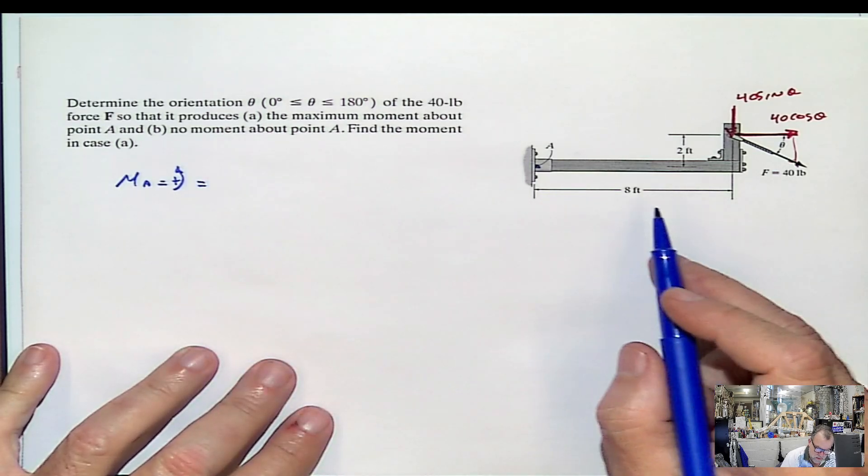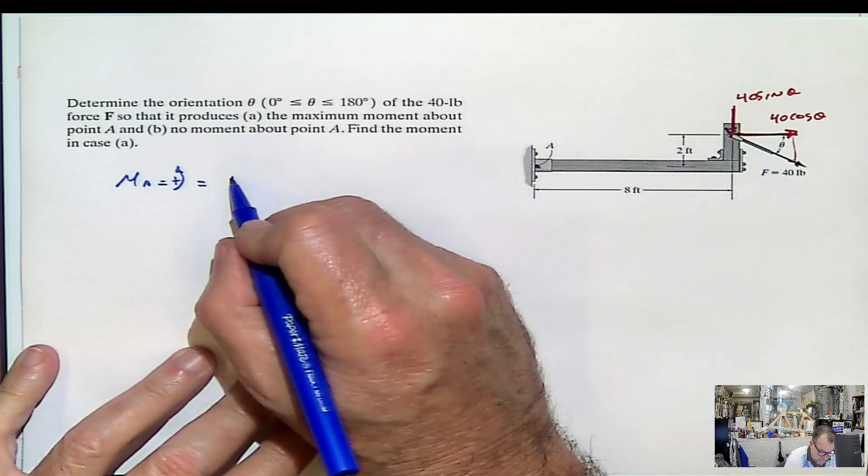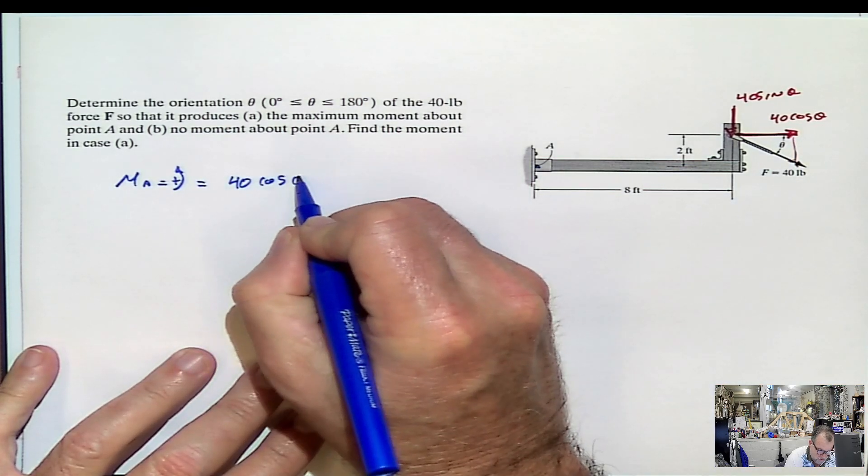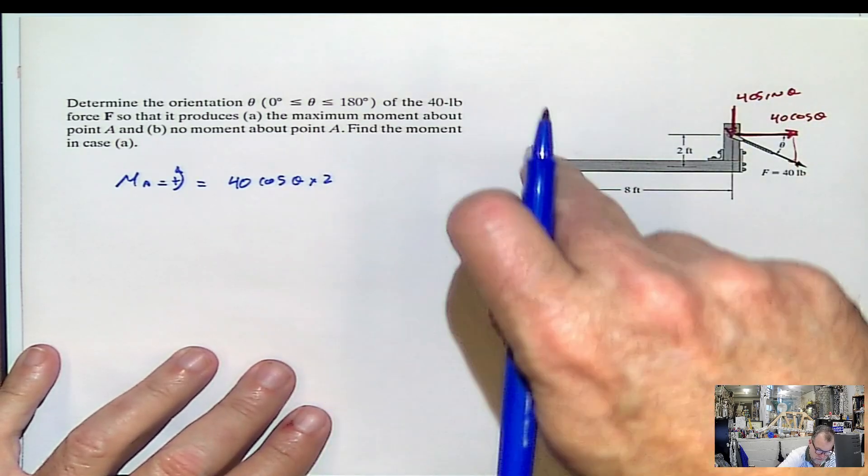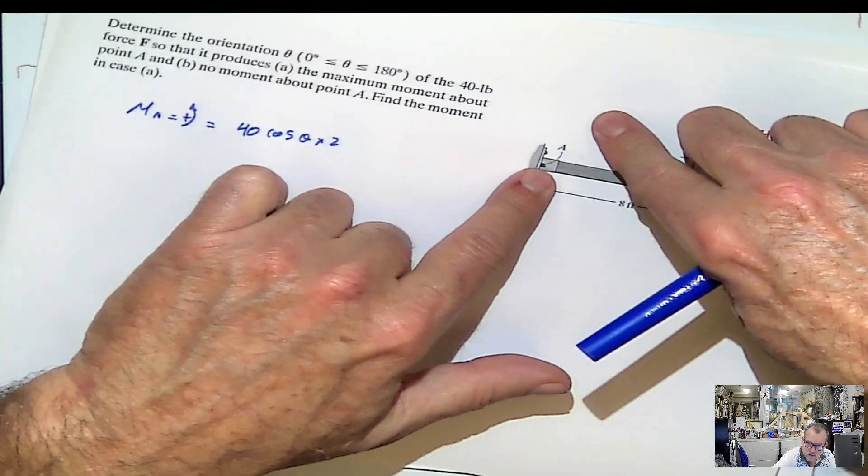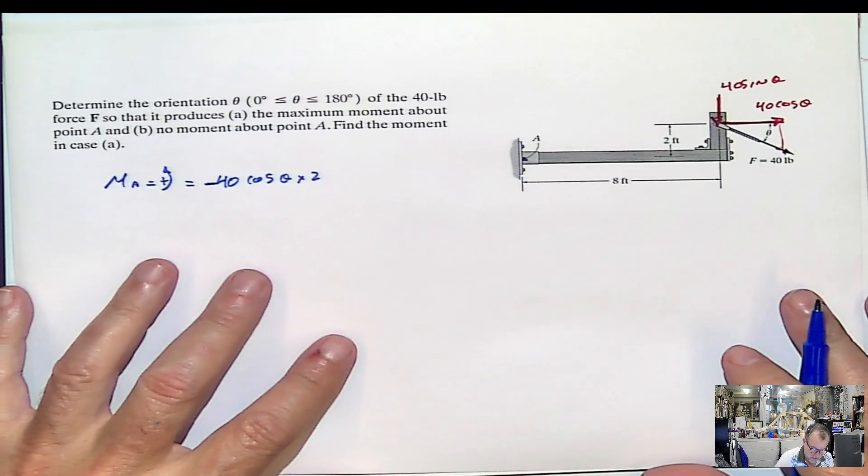That would be 40 cosine of the angle, multiplied by 2 in this direction. If I push it here, remember, this is going to rotate like that. So it's going to be negative, according to our convention here.